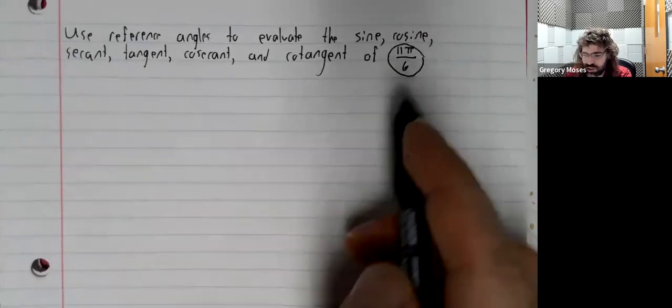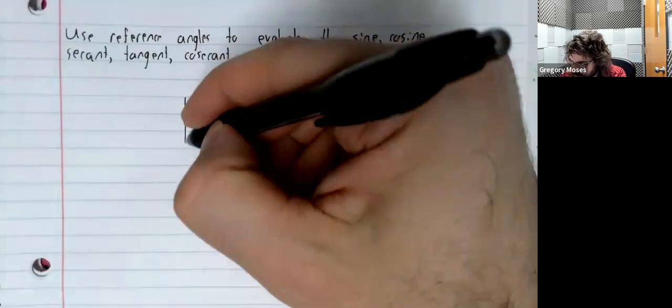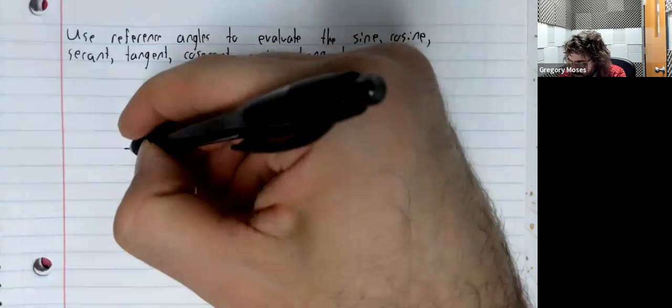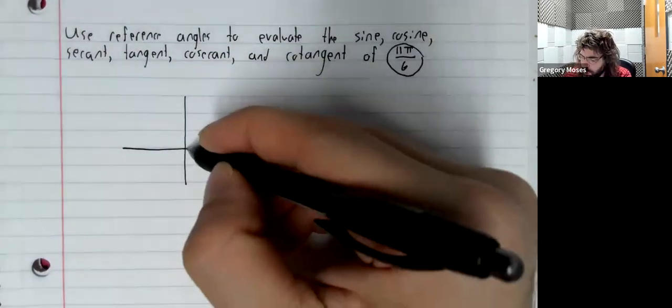And since you don't see a degree symbol, that's 11 pi over 6 radians. So, 11 pi over 6 is in the fourth quadrant.